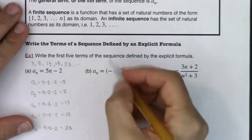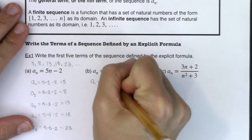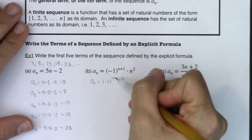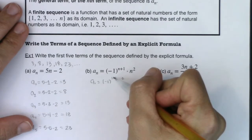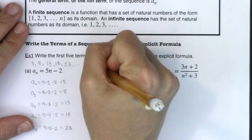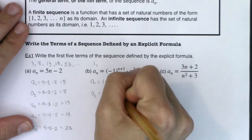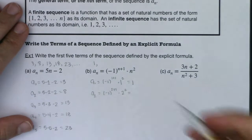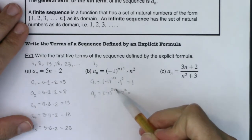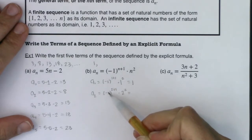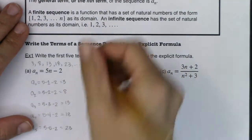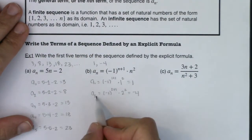Let's look at this next sequence. a sub 1 would be negative 1 to the (1+1) times 1 squared. Using order of operations: 1 plus 1 in the exponent is 2, negative 1 squared is 1, and 1 squared is 1, so 1 times 1 is 1. For a sub 2: negative 1 to the (2+1) times 2 squared. Two squared is 4. Two plus 1 is 3, and negative 1 to the 3rd power is negative 1. So negative 1 times 4 is negative 4.